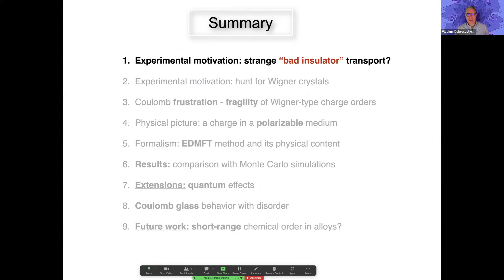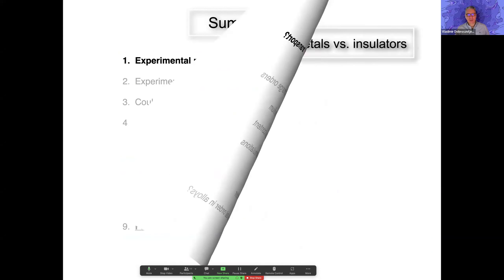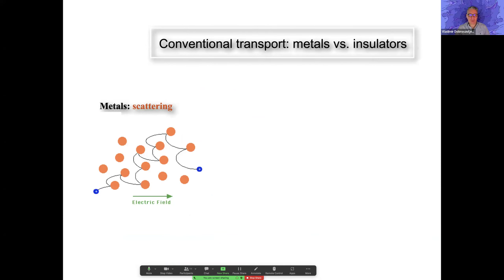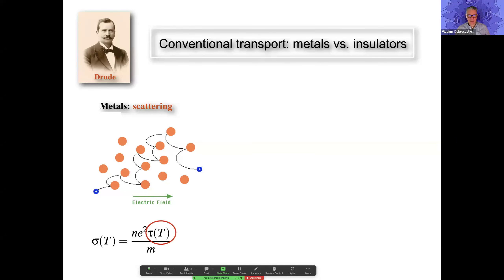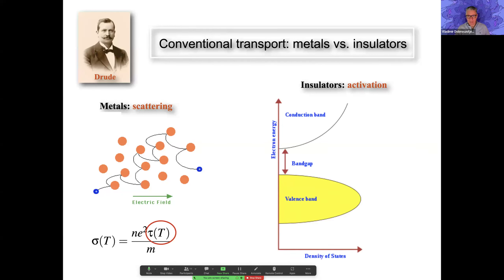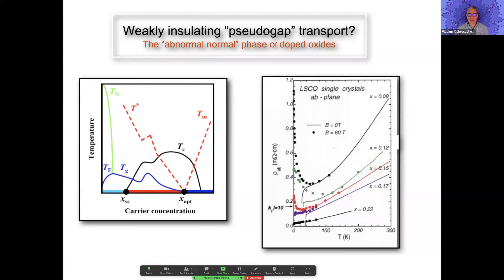Let me start from the beginning. There is standard transport behavior we are all familiar with. In metals, scattering from impurities or thermal fluctuations like phonons increases with temperature, so resistivity goes up. This is the so-called Drude theory. Similarly, in insulators, we have a gap in the spectrum, and we need to overcome it thermally — so at low temperature resistivity goes up exponentially. These are the familiar metallic and insulating regimes.